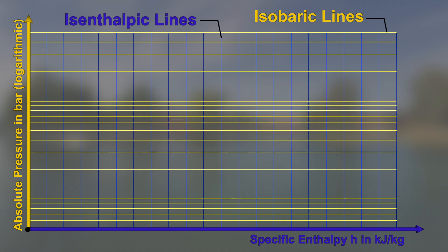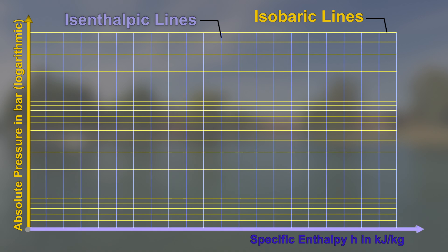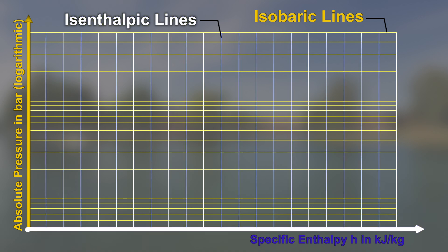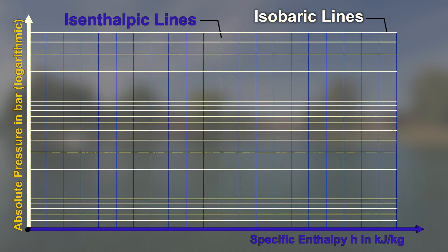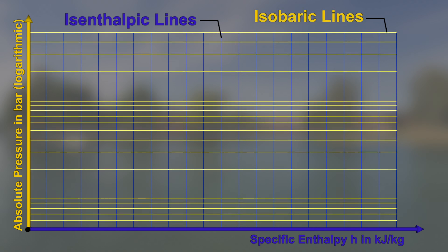While the specific enthalpy h on the horizontal axis is shown in a linear scale, the pressure p on the vertical axis is shown in a logarithmic scale. This can be seen in the distribution of isenthalpic and isobaric lines.